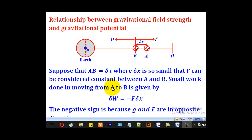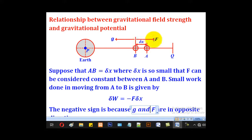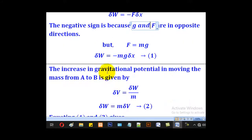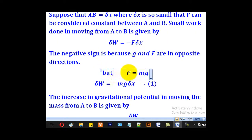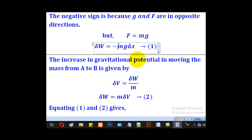The small work done moving from a to b is given by negative f multiplied by delta x. The negative is there because g and f are in opposite directions, as shown in the diagram. Since f equals mg, substituting gives work done as negative mg multiplied by delta x. That will be equation 1.